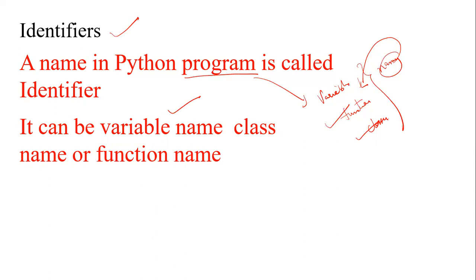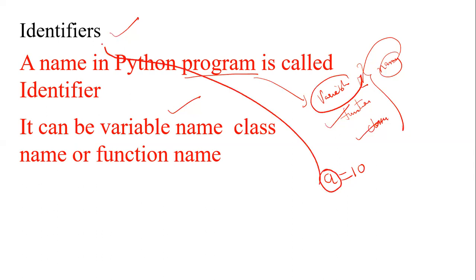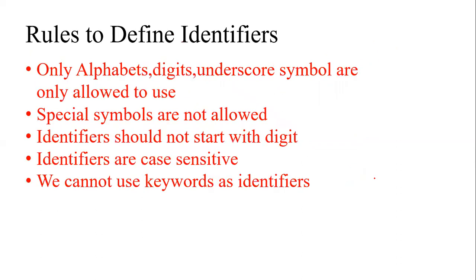As of now you may not be aware of what a class name or function name is, so let's focus on variables. For example, if I take 'a = 10', then 'a' is a variable, and on top of that, 'a' is also an identifier. An identifier can be a variable name, a class name, or a function name. We have certain rules to define those variables, and we are strictly making our discussion about variables only.